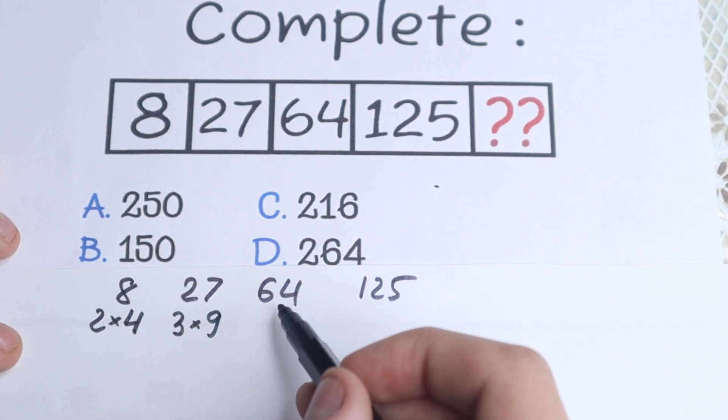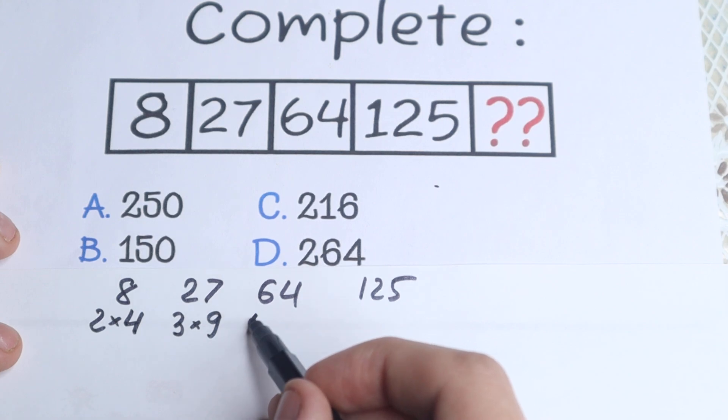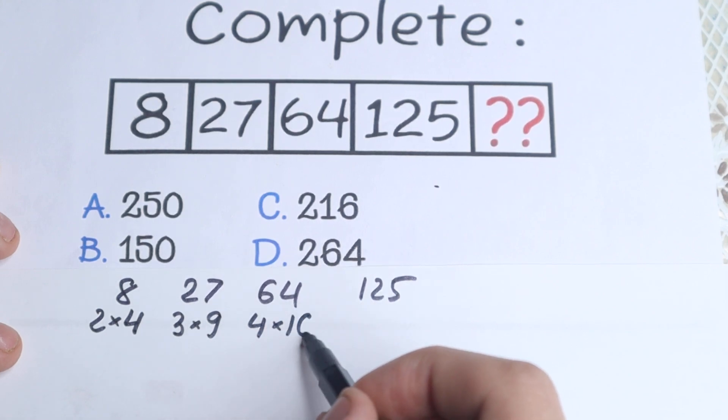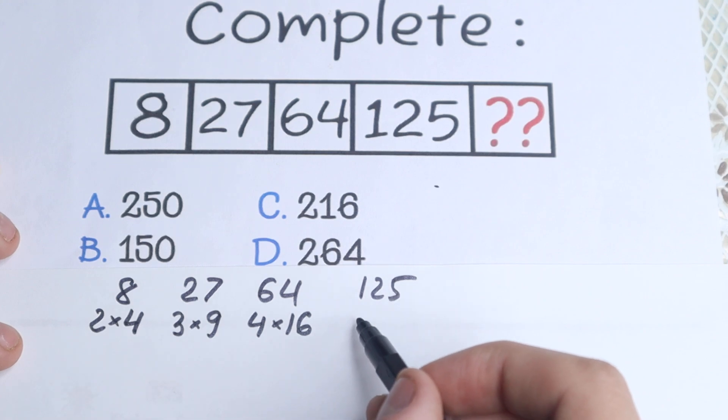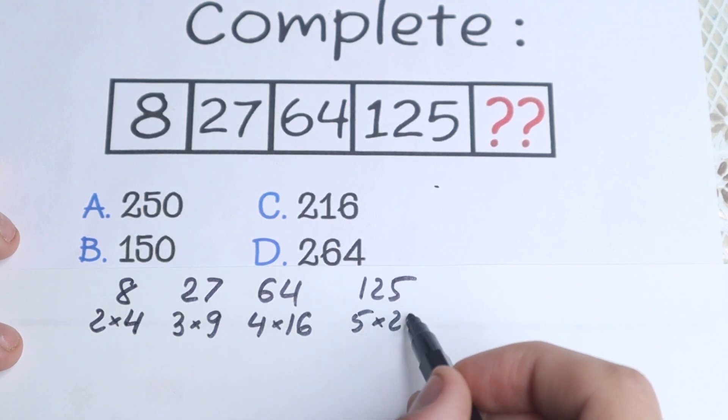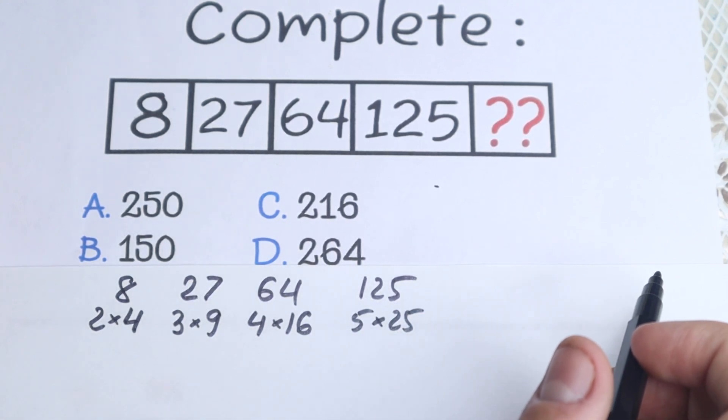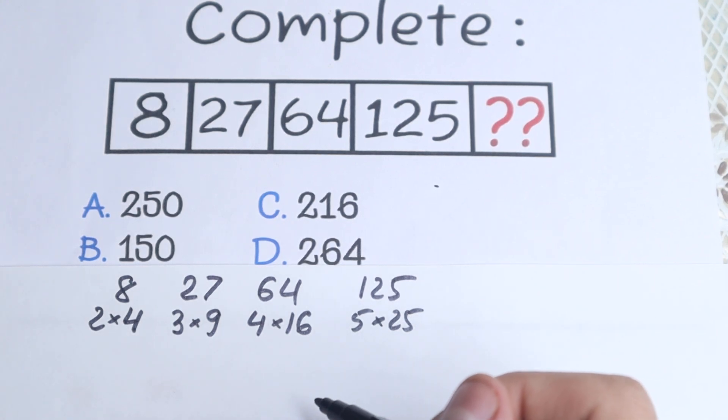This one, what about this one? 4 times 16, I guess. And 125 as 5 times 25, which is really great. We just write it in another way.